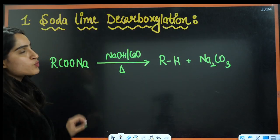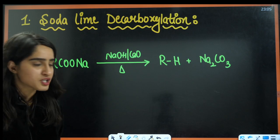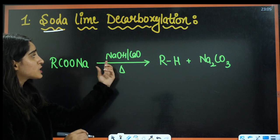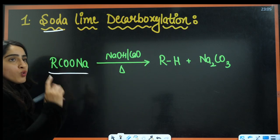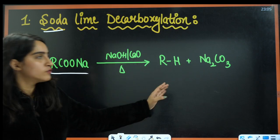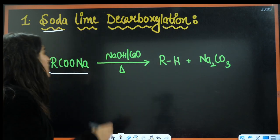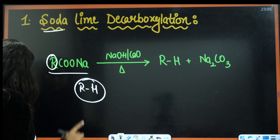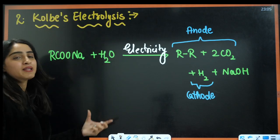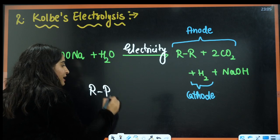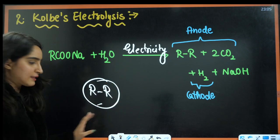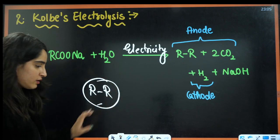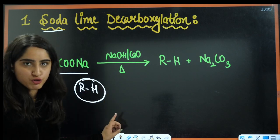Let us start with the first question: soda lime decarboxylation. Here we have used caustic soda and quick lime, and the sodium salt of carboxylic acid is getting converted into alkane (RH) and Na₂CO₃. In Kolbe's electrolysis, the same sodium salt gets converted into R-R — the alkyl part is doubled. Here the alkyl part just gets a hydrogen addition.